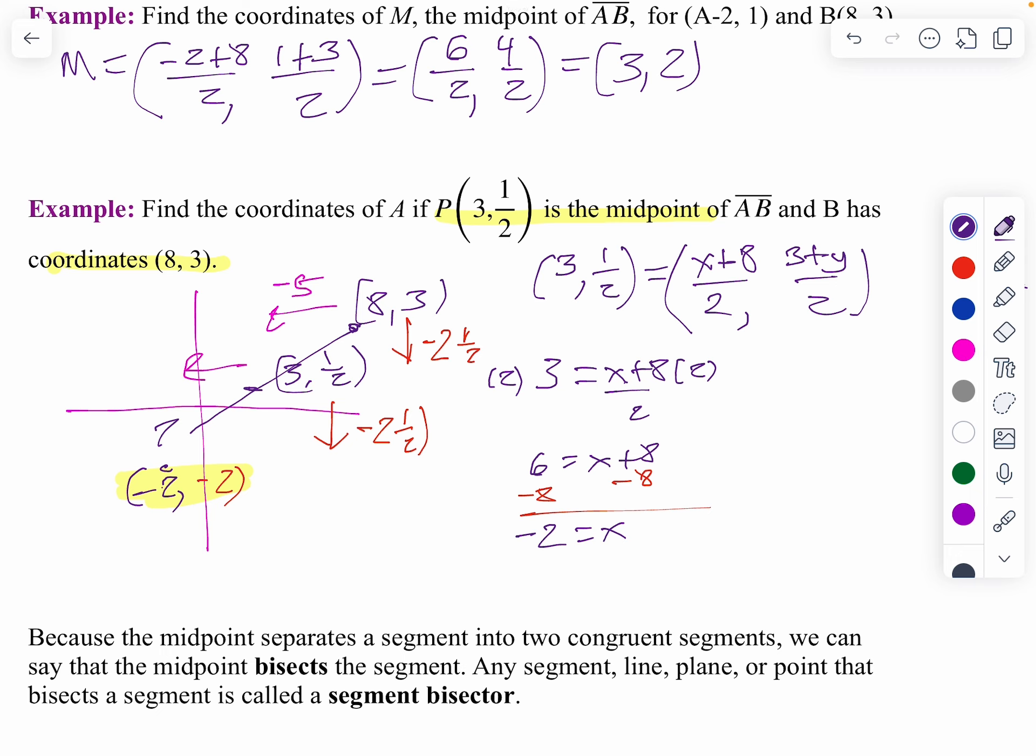And then, let's do the same thing for my y. So 1 half equals 3 plus y over 2. Let's clear our fractions. Multiply by 2. I have no more fractions at all. 1 equals 3 plus y. So I'll minus 3 from both sides. And we get negative 2 equals y. And there's your answer for that.